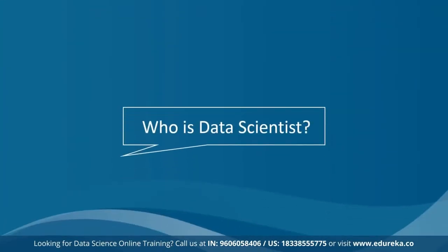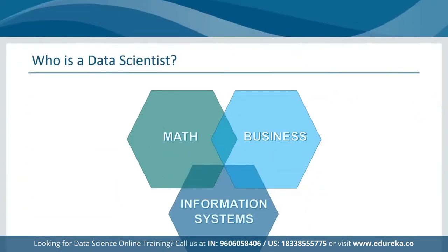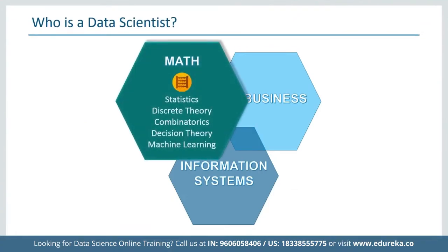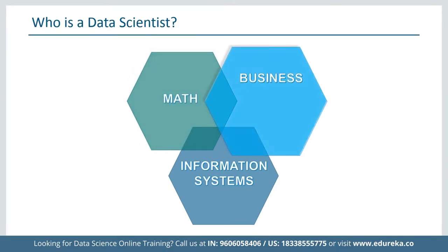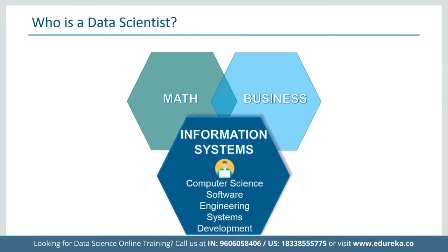Who is a data scientist? A data scientist is a master of all trades — proficient in math, business, and computer science. Don't be scared though: there's no such thing as a complete data scientist. In a corporate environment, work is distributed amongst teams where each team has their own expertise. You should be proficient in at least one of these fields, and even if these skills are new to you, they can be developed — and it would be worth the time you invest.